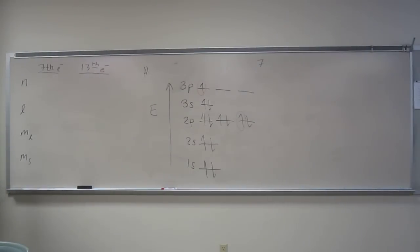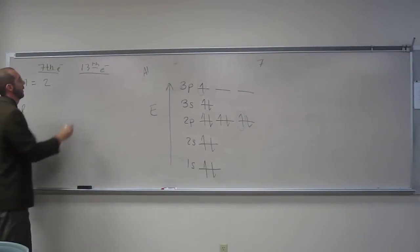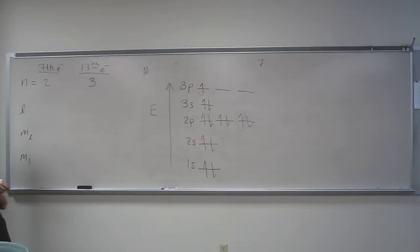So anyways, n, so the principal energy level for the 7th electron is what? Two. Two, very good. What about for the 13th electron? Everybody? Three. Do you guys all agree that it's three? Yeah, I do too.